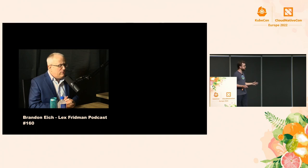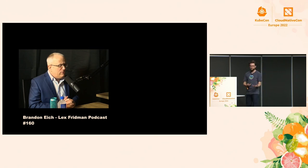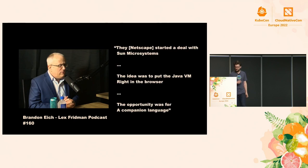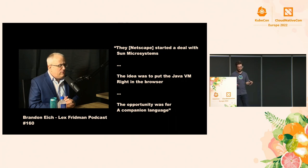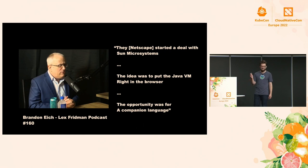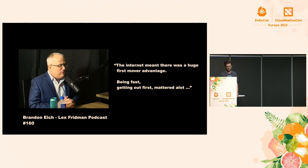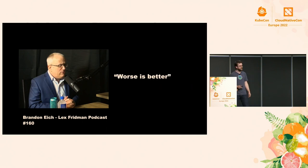Brendan Eich was tasked with making this happen. He said Netscape started a deal with Sun Microsystems to put the Java VM right in the browser. The opportunity was for a companion language — sort of glue, duct tape language that designers or product people could use without going too low-level. At the time it was called Mocha, and today it has become JavaScript. He created it in 10 days. He said the internet meant there was a huge first-mover advantage — getting out first mattered a lot. So they got something out really fast, and it had a ton of sharp edges.